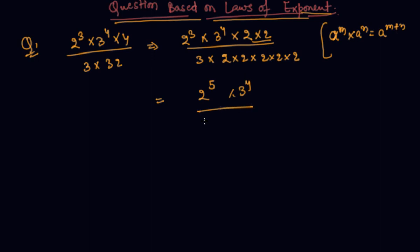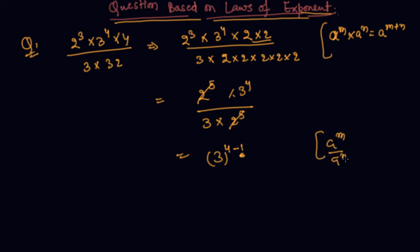In the denominator this is 3 into 2 raised to power 5. So 2 raised to power 5 and 2 raised to power 5 will cancel, and we are left with 3 raised to power 5 minus 1. Here I have used the formula: a raised to power m upon a raised to power n equals a raised to power m minus n. In the bracket I am writing which formula I am using. This gives 3 raised to power 4... actually this simplifies to 3 raised to power 3, which is 27.